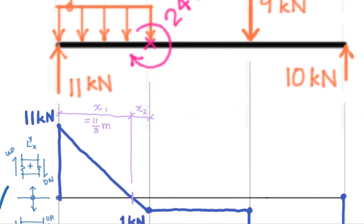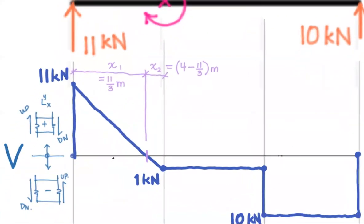I'm just going to remove this to keep my workspace nice and tidy. And for x two, I'm just going to express that as the total distance four minus the partial distance 11 thirds. Both of those are in meters. So what I'm doing is taking this distance of four, subtracting out that distance of 11 thirds, that leaves me this piece, four minus 11 thirds meters.